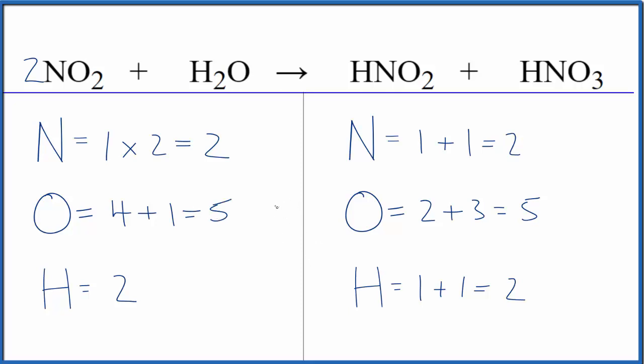When you're balancing, it's often helpful to leave the oxygen atoms until last. This is Dr. B balancing the equation NO2 plus H2O yields HNO2 plus HNO3. Thanks for watching.